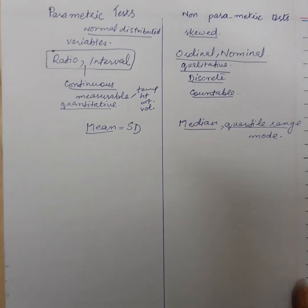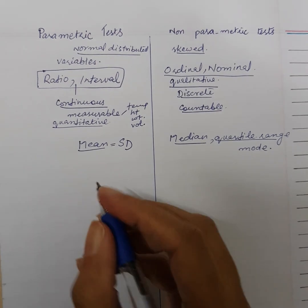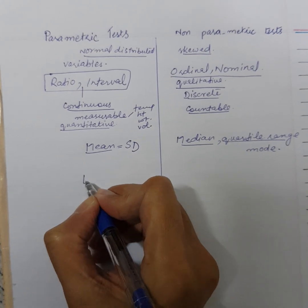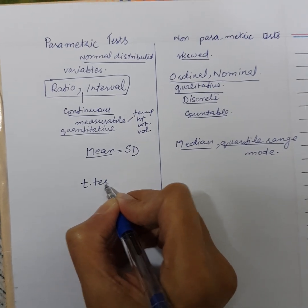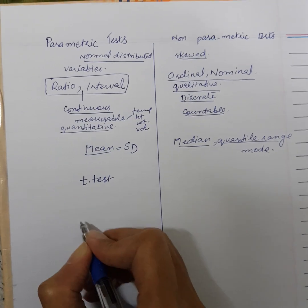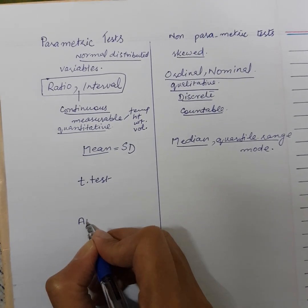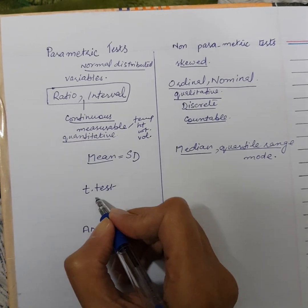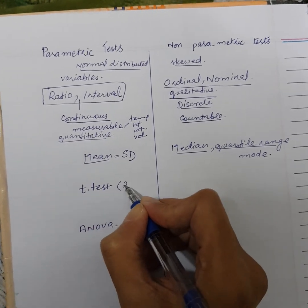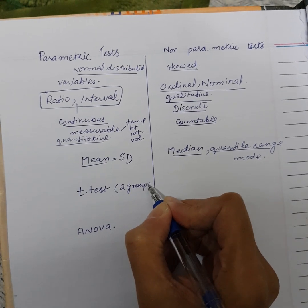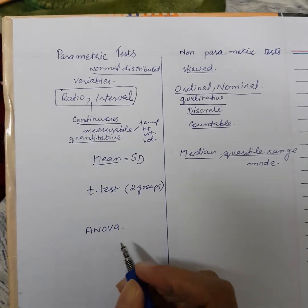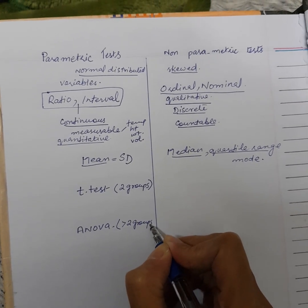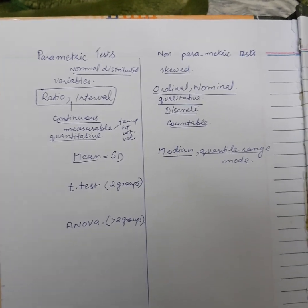What are the parametric tests? The parametric tests are the very popular Student T-test and then ANOVA. When the data has up to two groups, we will use the T-test. When the data has more than two groups, we will use ANOVA.